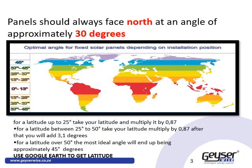The orientation and inclination of your photovoltaic panels is absolutely very important. Panels should be facing north at an angle of approximately 30 degrees pitch.